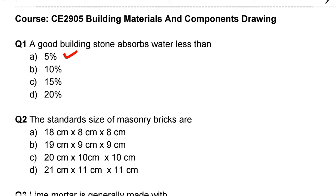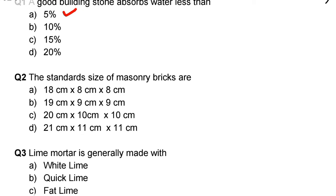Next question: standard size of masonry bricks are. Option A: 15 cm × 8 cm × 8 cm, Option B: 19 cm × 9 cm × 9 cm, Option C: 20 cm × 10 cm × 10 cm, Option D: 21 cm × 11 cm × 11 cm. The correct answer is option B, 19 cm × 9 cm × 9 cm.